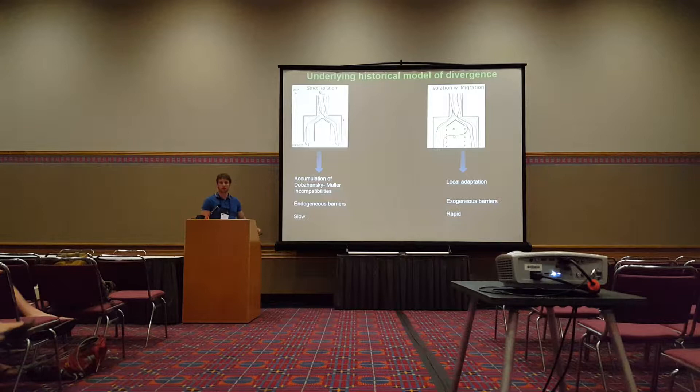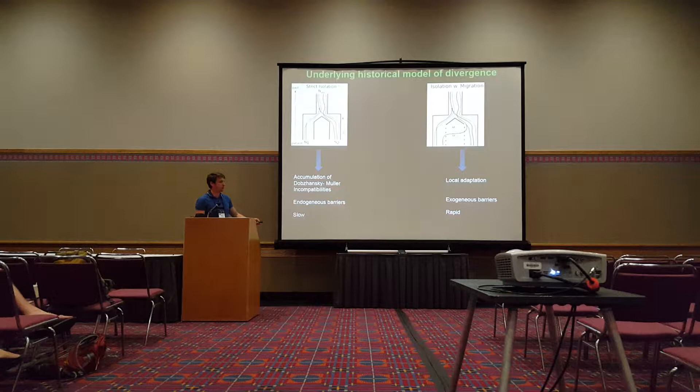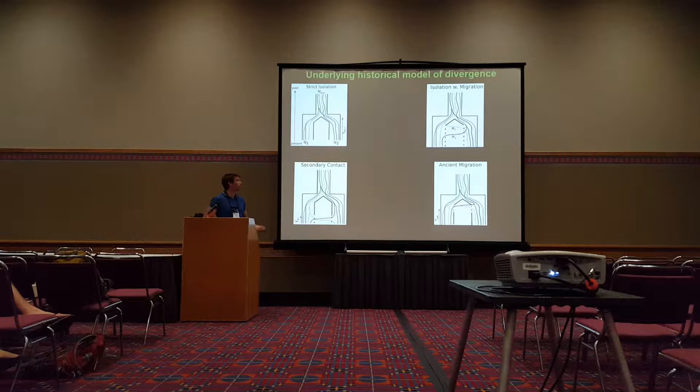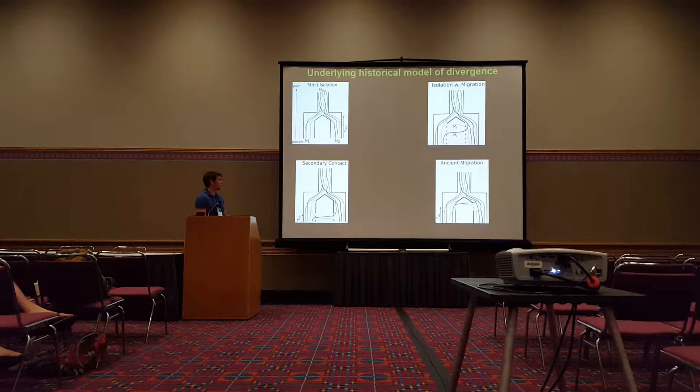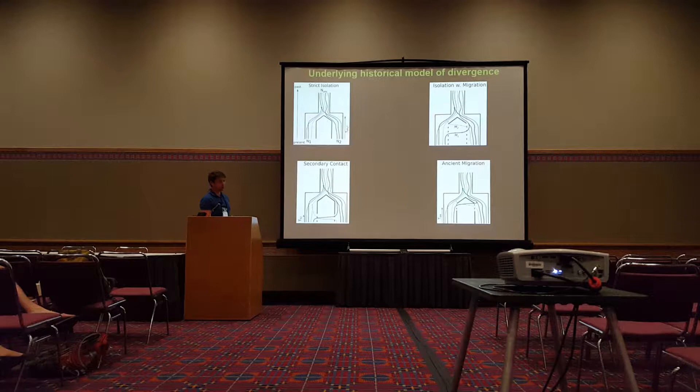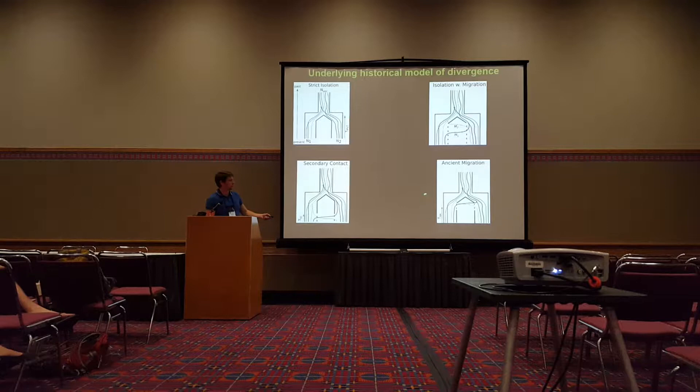We can also imagine more complex models, like a model of secondary contact, where the population will split and be under strict isolation at the beginning, accumulating genetic incompatibility, and then gene flow will erase traces of differentiation. And you can also have a process of ancient migration, where the level of migration is initially present and then stops, so the species evolve under strict isolation.